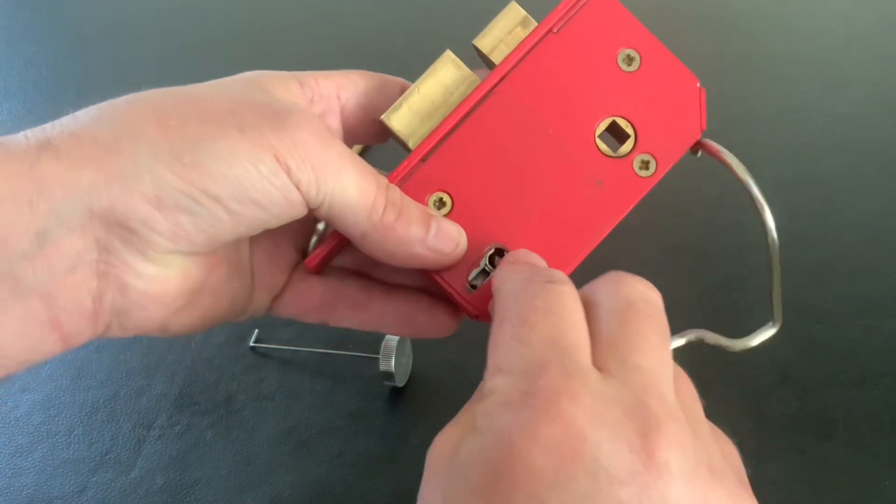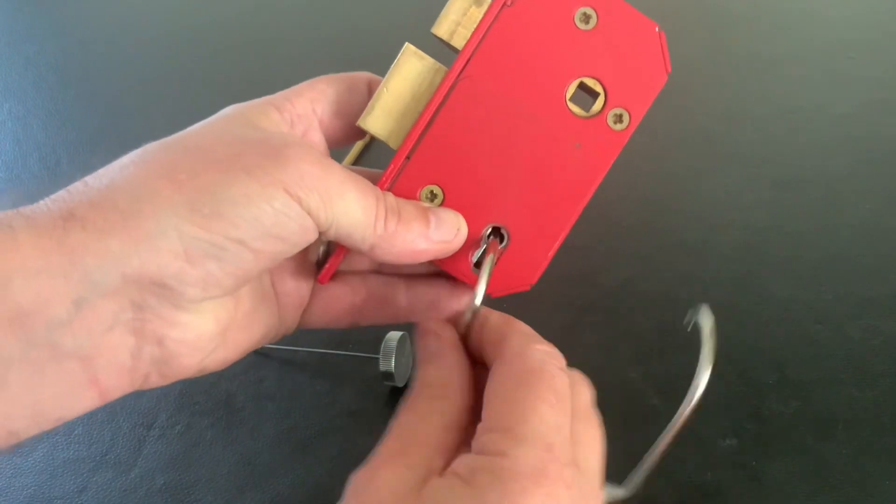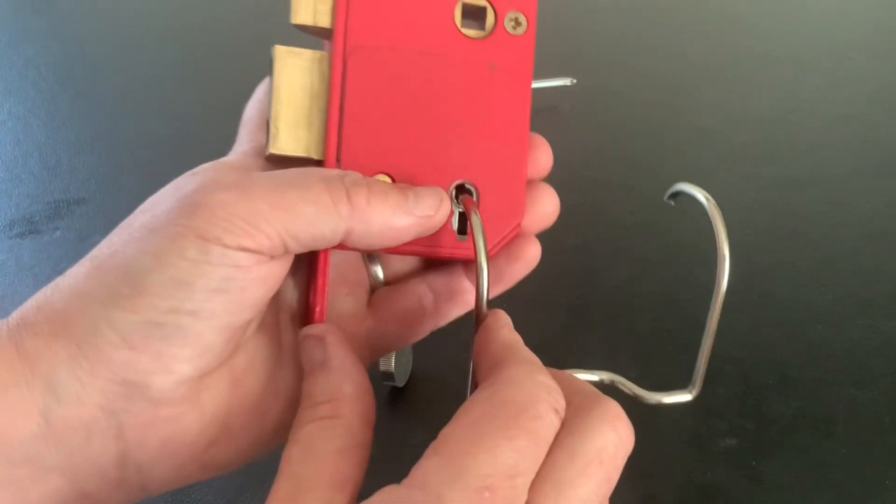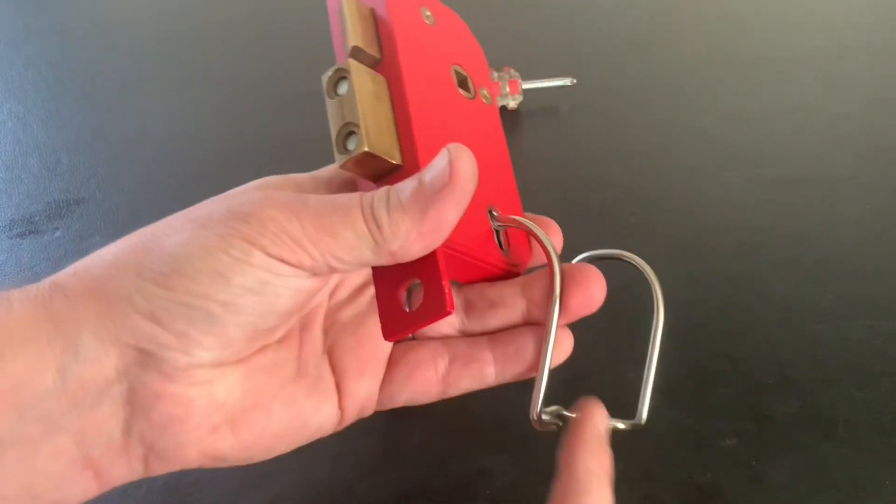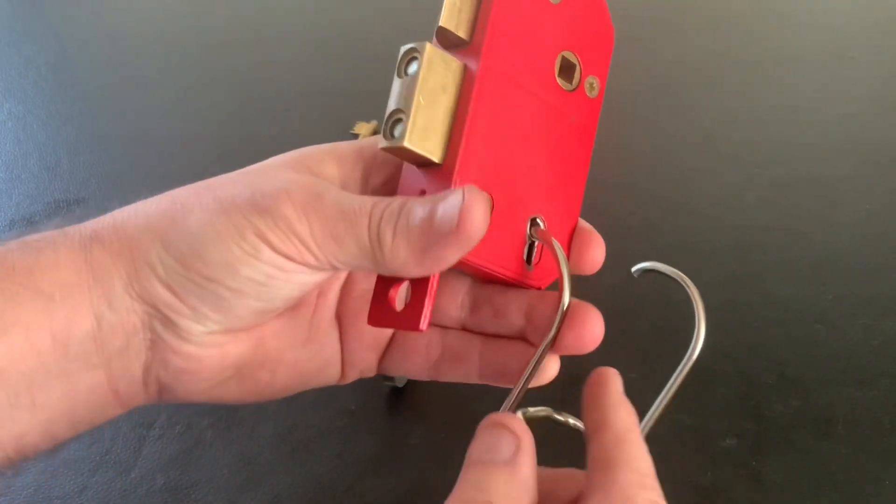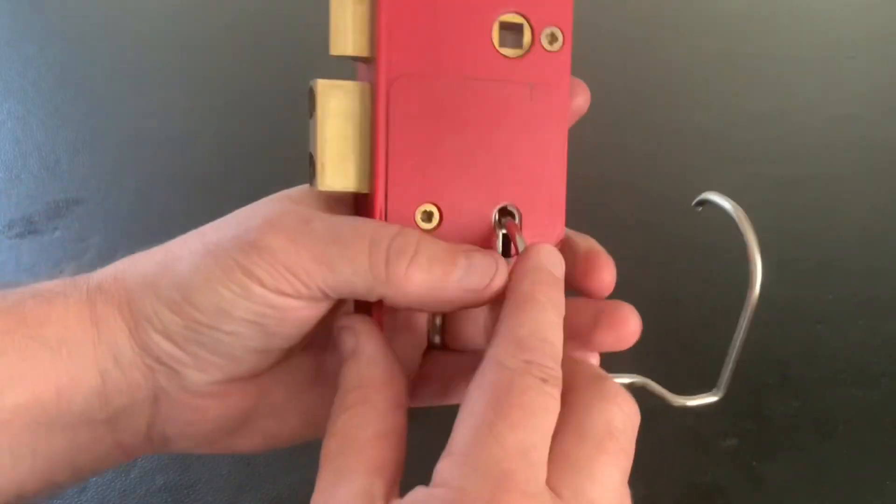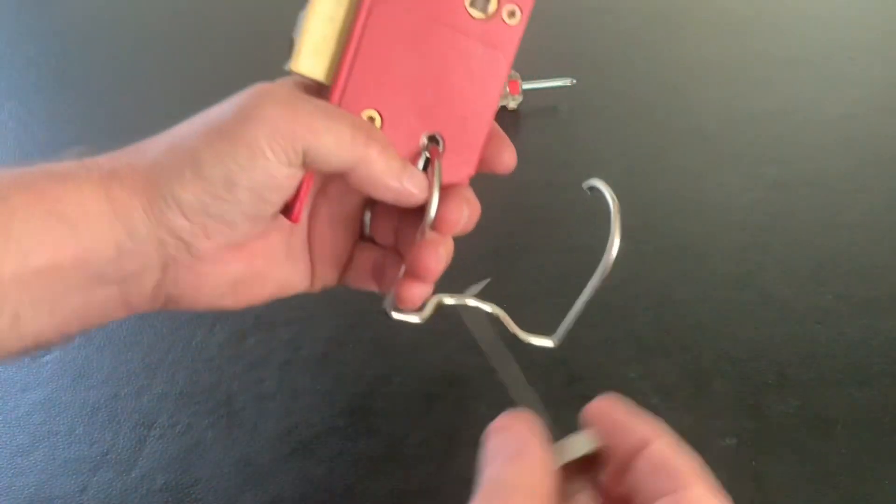Obviously people might say oh you couldn't do that in a door. Well you could, because you could actually bend this and shape it to how you wanted it. But all I'm using is the actual natural bend of the hook to tension the bolt.